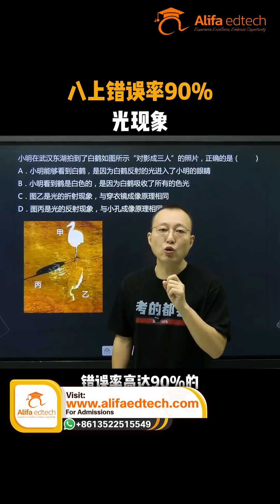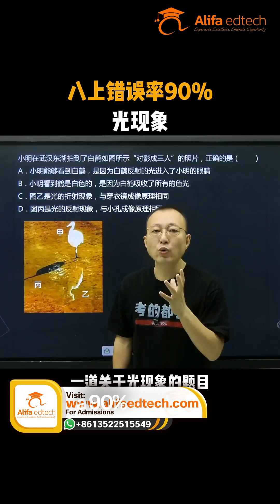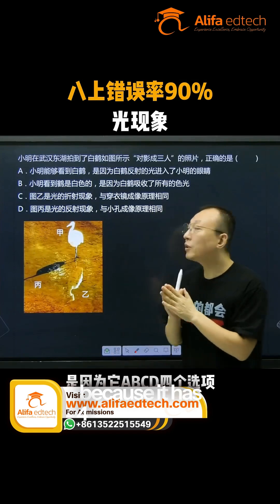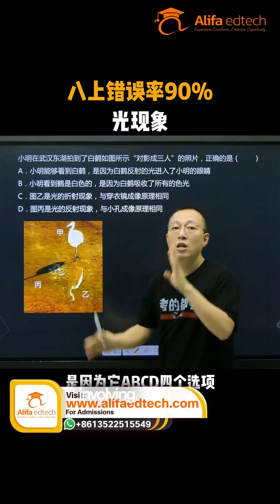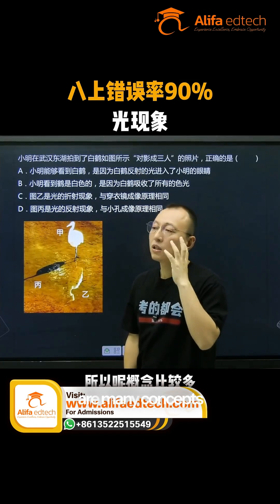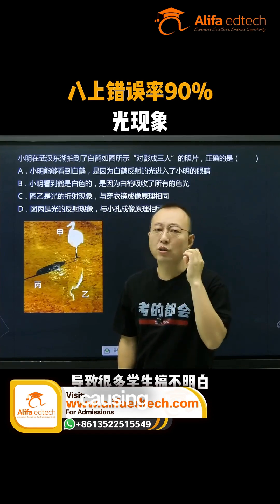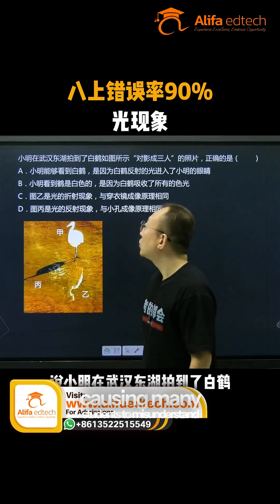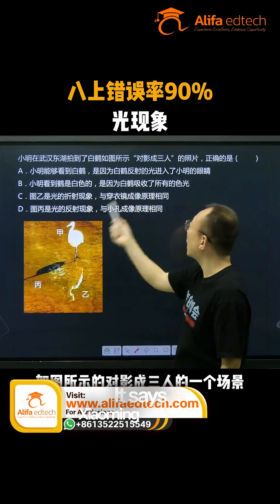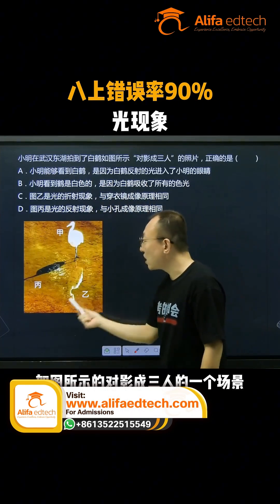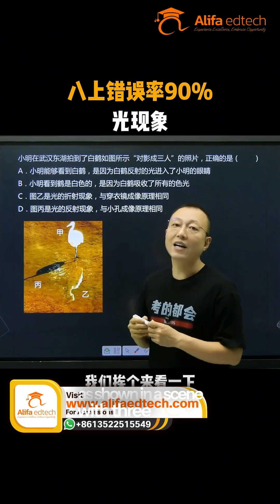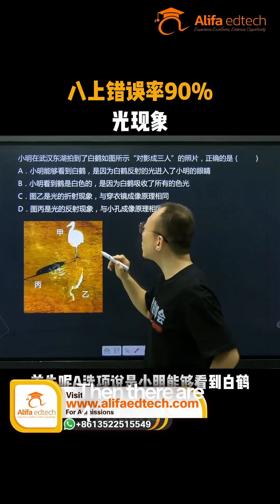A light phenomenon question with a 90% error rate. This question is difficult because it has four ABCD options involving four different concepts, so there are many concepts with strong interconnections causing many students to misunderstand. Let's look at the question. Xiaoming at Wuhan East Lake photographed a white crane, as shown in a scene with three people. Then there are four options.